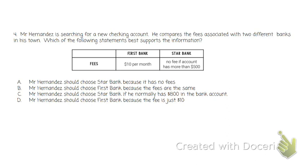Next problem — this one is a little bit tough the way it's worded. Mr. Hernandez is searching for a new checking account. He compares the fees associated with two different banks in his town. Which of the following statements best supports this information? At First Bank, they charge you $10 a month no matter how much money you have in the bank. At Star Bank, as long as you have more than $500 in your account, there's no fee at all. Which one's the best? Well, it really depends on your situation. If you have less than $500 a month in your account, you're going to have a fee at Star Bank, but at First Bank that doesn't change.